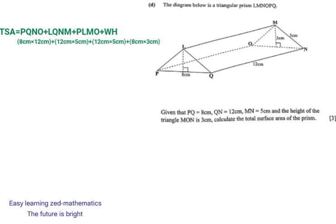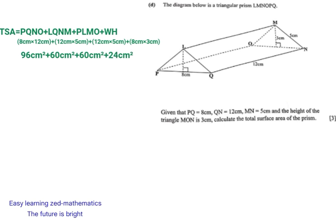Once we've done that, we're going to find the product of each: 8 cm × 12 cm gives us 96 cm², plus 12 cm × 5 cm gives us 60 cm², plus 12 cm × 5 cm gives us 60 cm², then plus 8 cm × 3 cm gives us 24 cm². Now we're going to find the sum of those four areas.